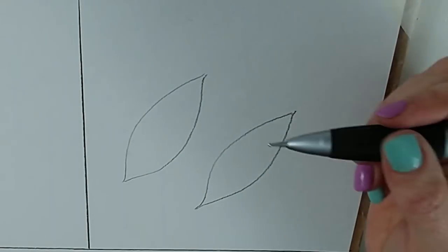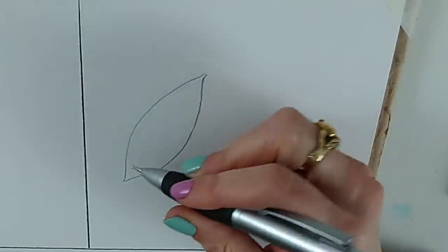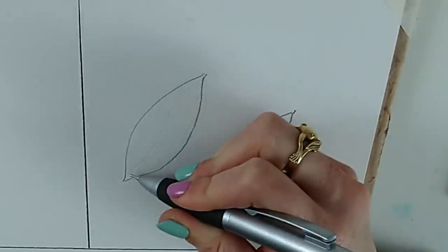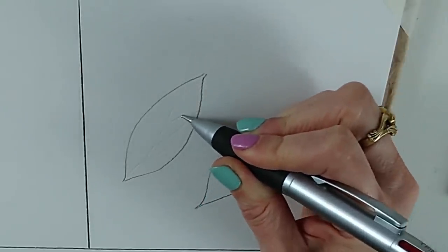So onto watercolor and continue with our leaf theme. I've drawn a couple of leaves here. Now, again, I'm going to emboss just onto the dry paper here. I'm going to emboss our leaf veins. And we're going to put watercolor paint on top.